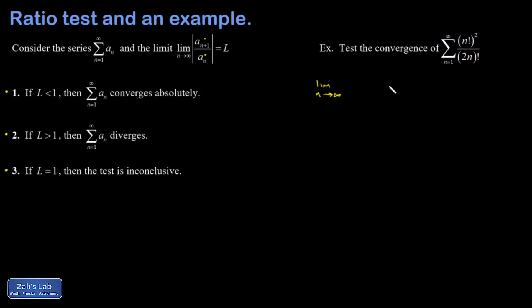I'm going to have the limit as n goes to infinity of the next term. So that's the n+1 term: (n+1)!² over 2(n+1)! divided by the nth term.